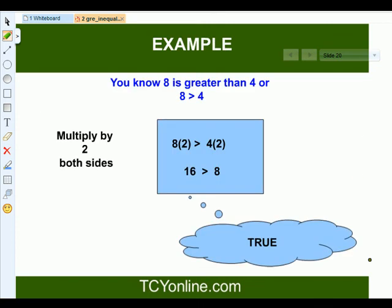For example, we are having 8 greater than 4. If we multiply both sides with positive 2, we simply get 16 greater than 8. And that's absolutely true.